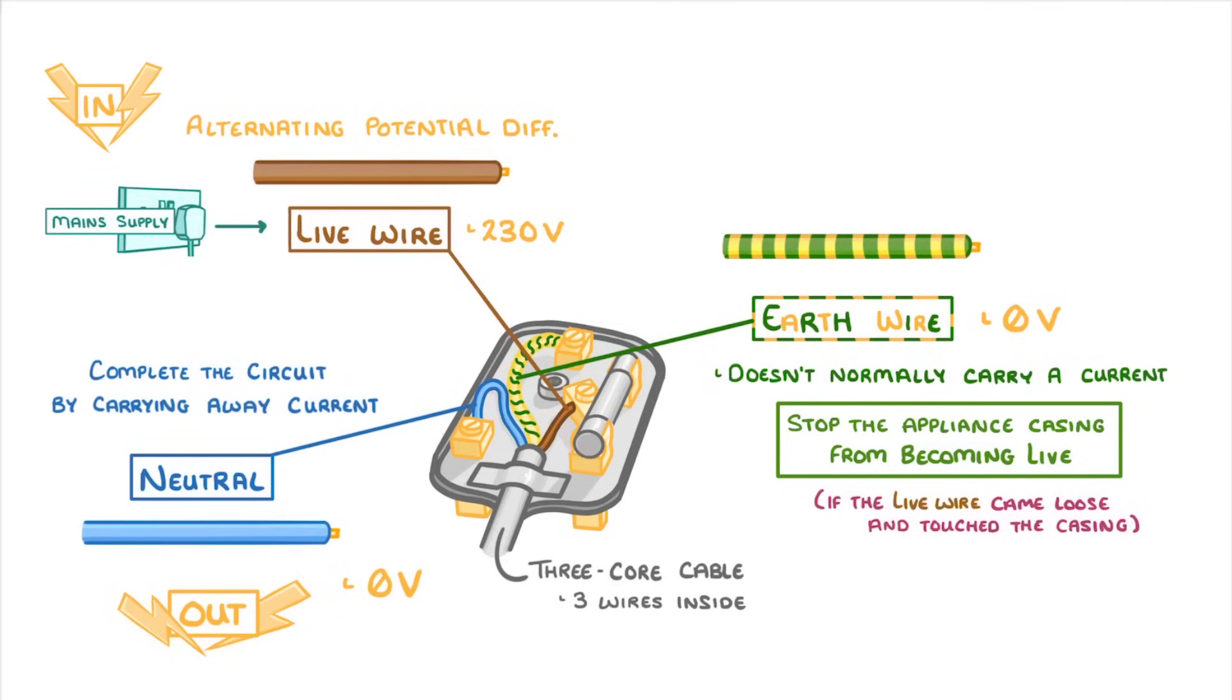This would mean that if we were to touch the casing we'd get a big electric shock. To prevent this the earth wire provides an alternative pathway for the current to flow away so that any dangerous electricity will pass through the earth wire rather than passing through us.